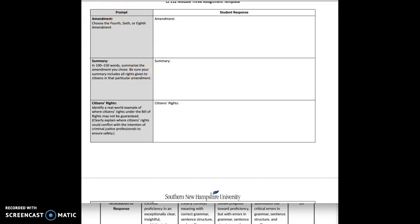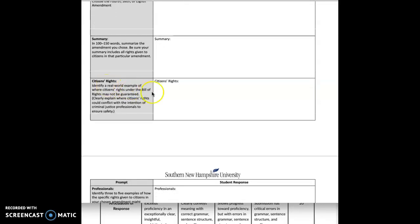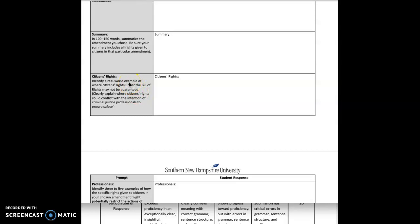Basically, if you had to explain to somebody what rights you have as a citizen of this country regarding search and seizure, you would be able to cite some of the rights specific to the fourth amendment, for example. For citizens' rights again, identify a real world example of where citizens' rights under the Bill of Rights may not be guaranteed. You can use your textbook, or maybe you're familiar with something you've read recently in the newspaper about a hometown case that applies to whatever amendment you select.